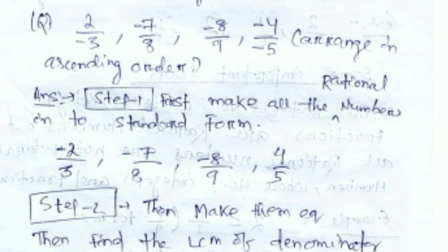You can see that all are unlike rational numbers. In fractions, like terms mean the denominator is the same; unlike fractions mean the denominator is different. When doing ascending or descending order with fractions, you make them like fractions — meaning you make the denominators the same by taking the LCM. Similarly, with rational numbers, we take the LCM of all the denominators.